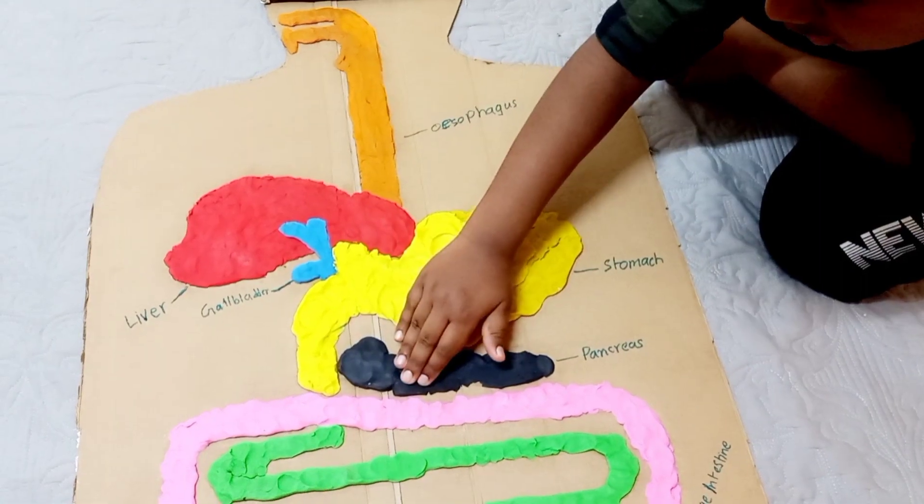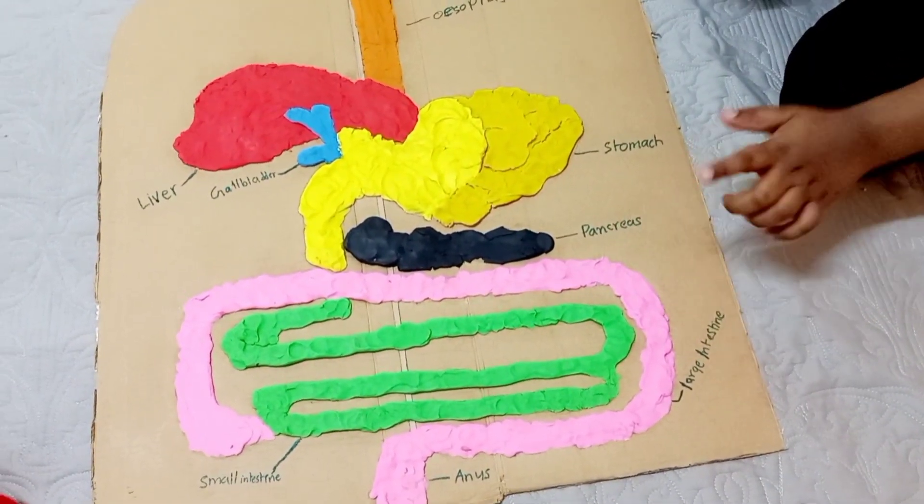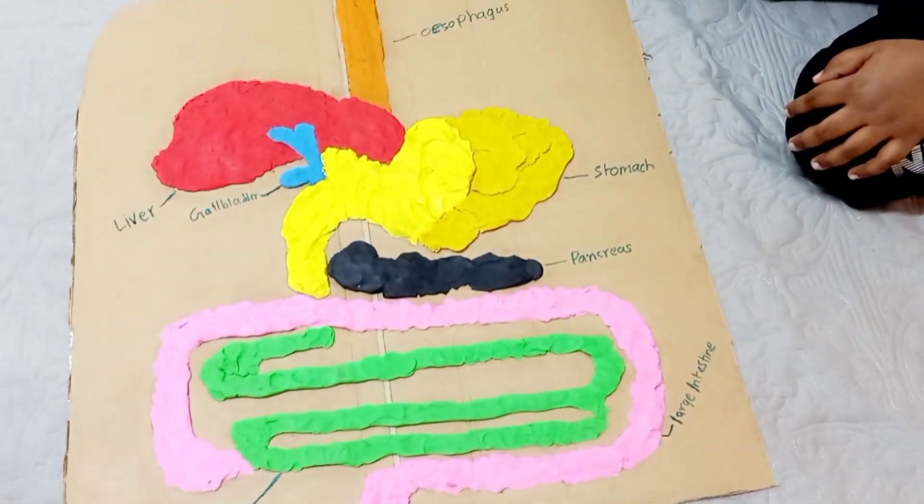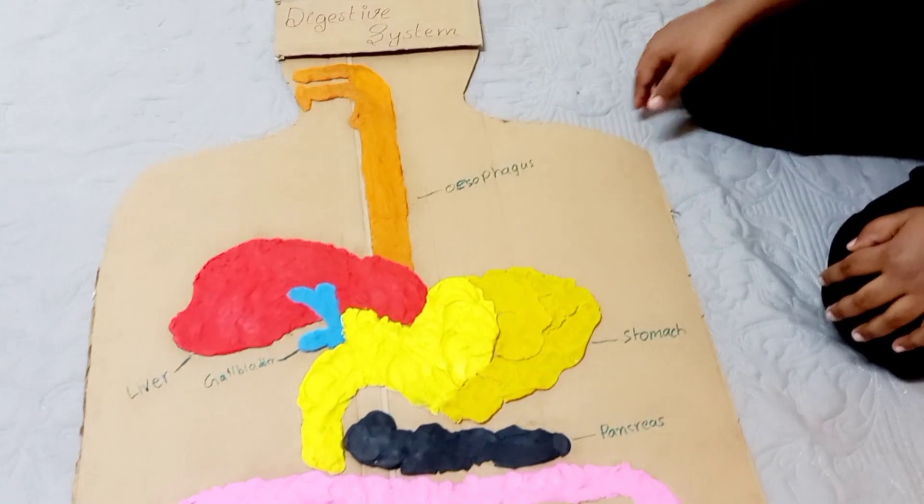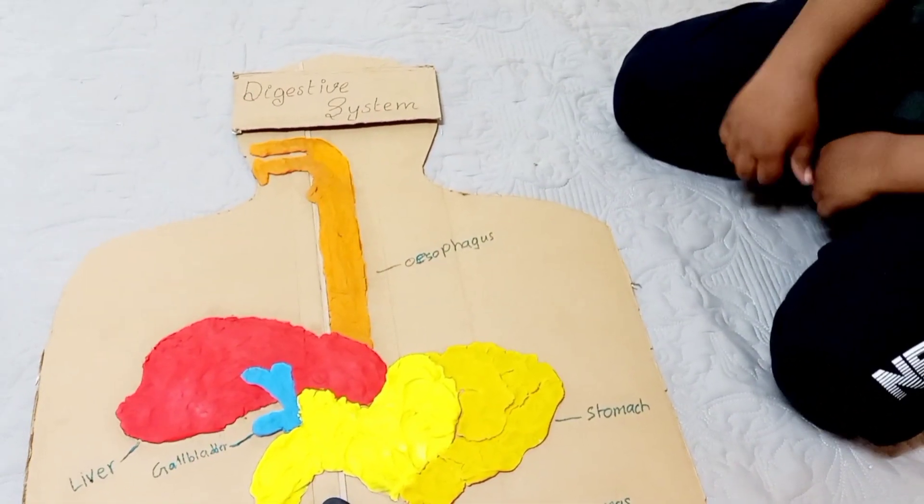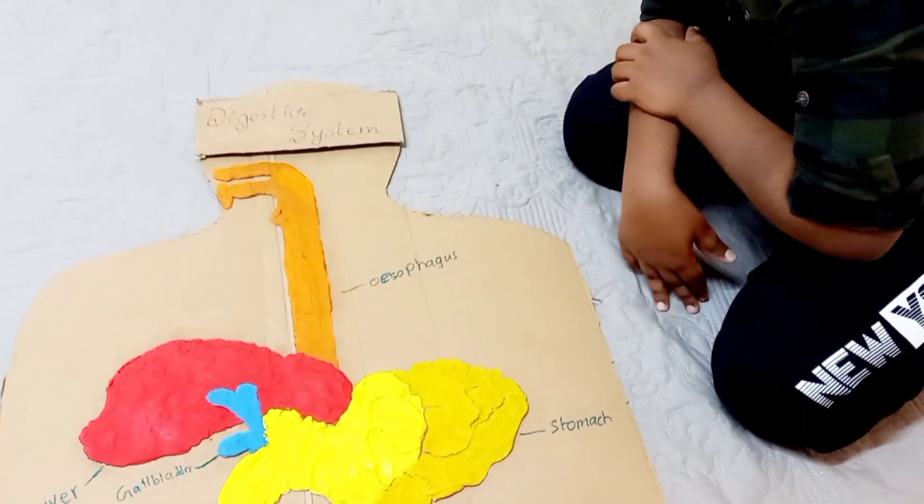The organs that take in food and liquids and break them down into substances that the body can use for energy, growth, and tissue repair. Waste products the body cannot use leave the body through bowel movements.